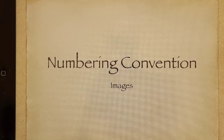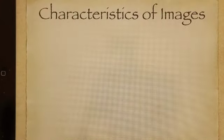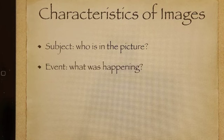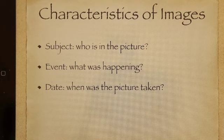This series explains the numbering convention for images. Images have several characteristics, such as subject — who is in the picture? An event — what was happening when the picture was taken? A date — when was the picture taken? And location — where were the subjects?